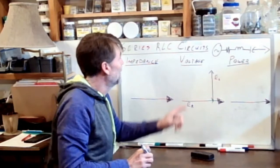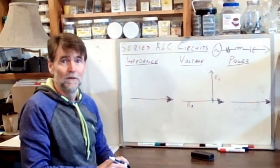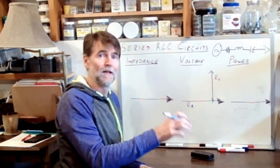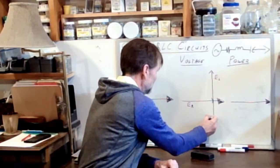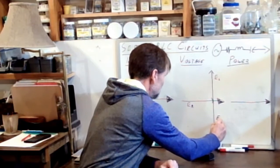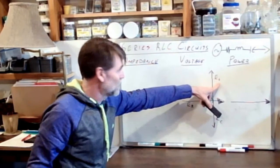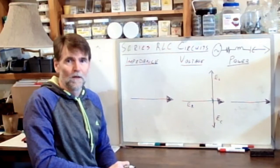What about the voltage vector representing the voltage drop across the capacitor? So Eli, the Iceman, in a capacitive circuit, the current leads the voltage. The voltage is going to lag behind the current. We're going to find it down here at 270 degrees, EC. Voltage drop across the resistor. Voltage drop across the inductor. Voltage drop across the capacitor.